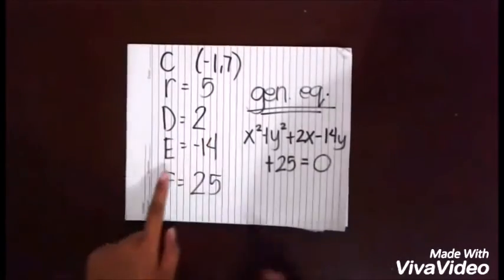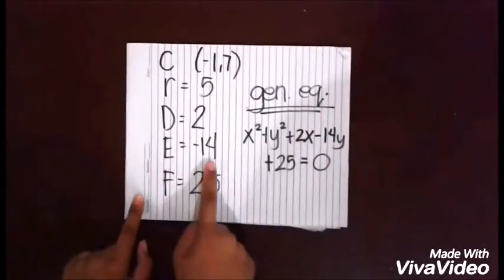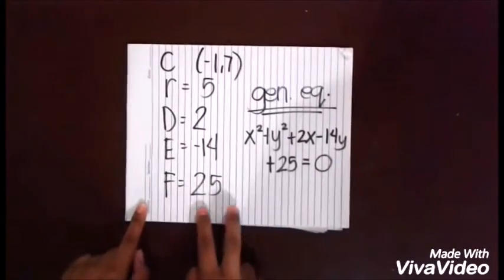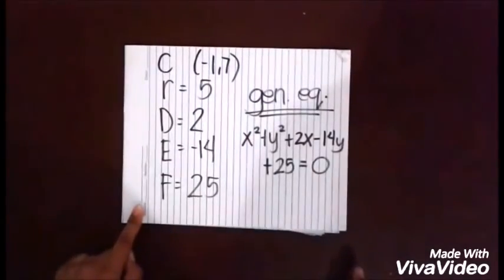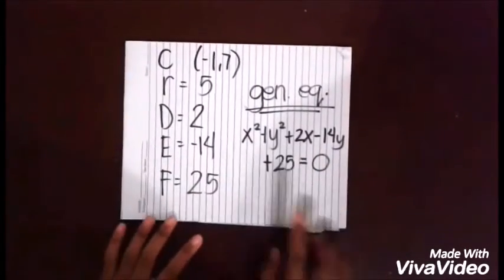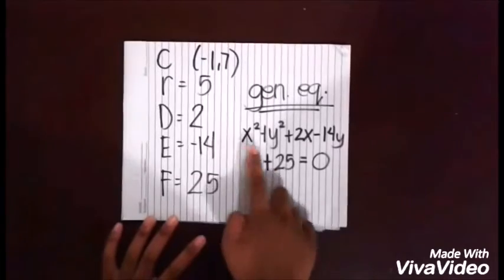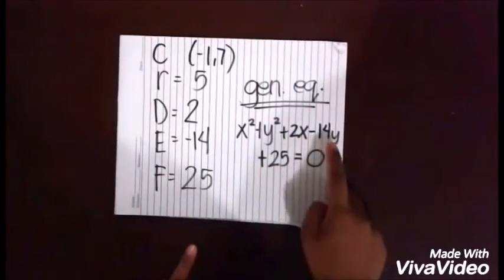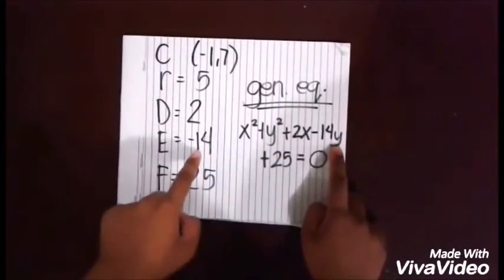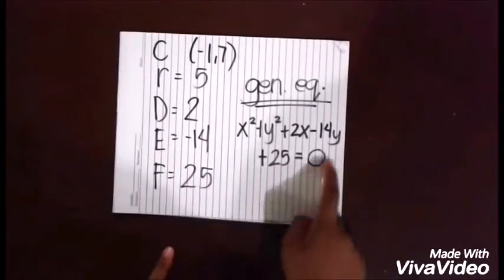Now you have all values: d = 2, e = -14, f = 25. Substituting into the general equation gives: x² + y² + 2x - 14y + 25 = 0. You now know how to determine a circle using three conditions. Thank you for watching.